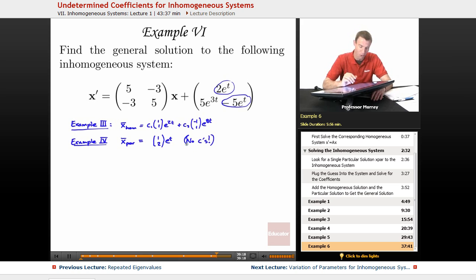And then example 5, that was where we found a particular solution to account for the e to the 3t term, and that turned out to be [3,2] e to the 3t. And again, there's no constants involved there. You don't multiply that by an arbitrary constant. We very carefully found those coefficients 3 and 2, and you can't multiply them by anything without messing up your solution.